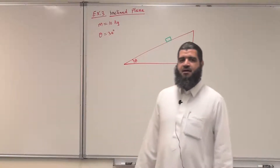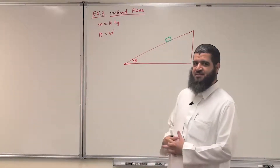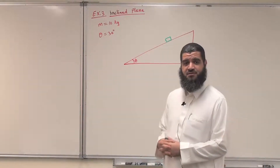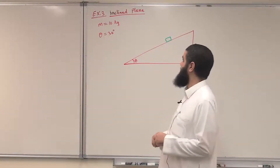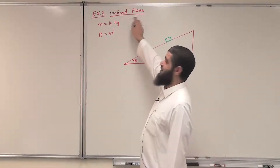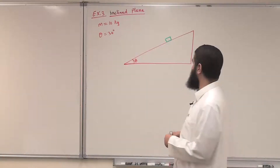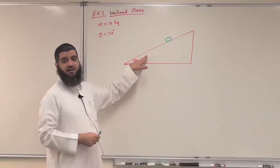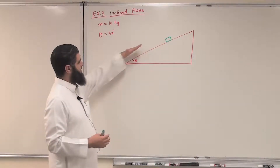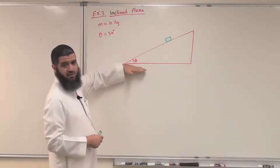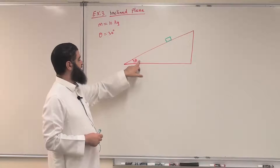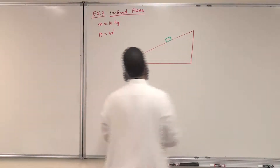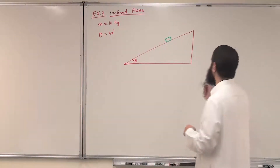Bismillah ar-Rahman ar-Rahim. A third famous example in the applications of Newton's laws is the inclined plane. We mean by inclined plane something like this: the plane is making an angle with the horizontal. This angle is theta and we place an object on this surface or this plane.